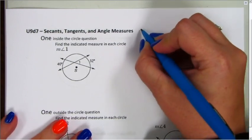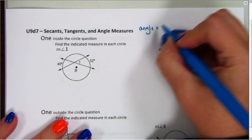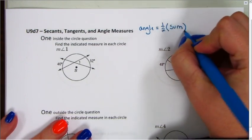Our formula that we're going to use is the angle equals, when we're inside, one-half the sum of the two intercepted arcs.